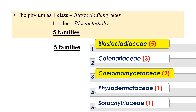This phylum consists of only one class, Blastocladiomycetes, and only one order, Blastocladiales. It consists of five families: Blastocladiaceae, Ketanaryaceae, Celomomycetaceae, Pyzodermataceae, and Sorokitaraceae. Blastocladiaceae has five genera, Ketanaryaceae has three, Celomomycetaceae has two, Pyzodermataceae has one, and Soromycetaceae has one genus.